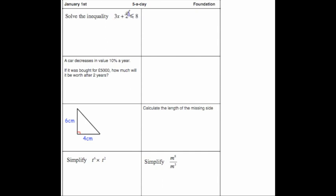First, we want to get rid of the plus 2, so we're going to take 2 away from both sides. 3x plus 2 take away 2 leaves you with 3x, and that's less than or equal to, well, 8 take away 2 is 6.